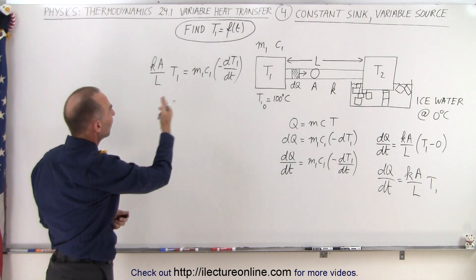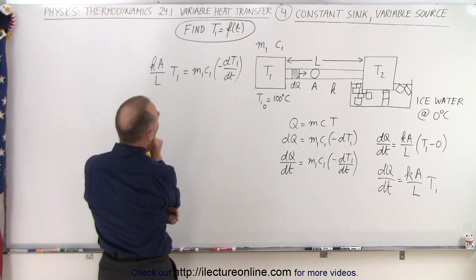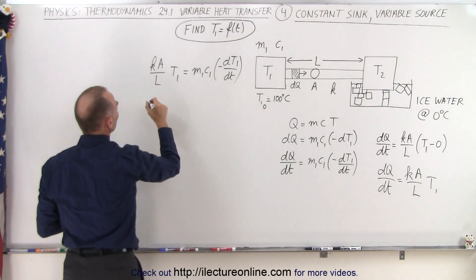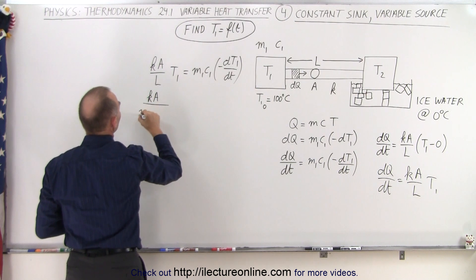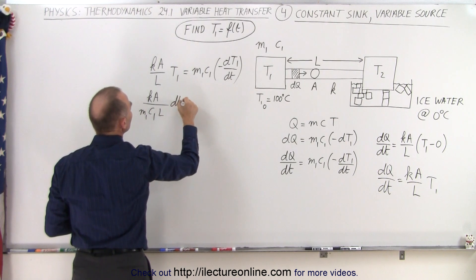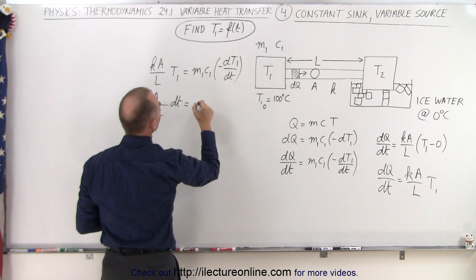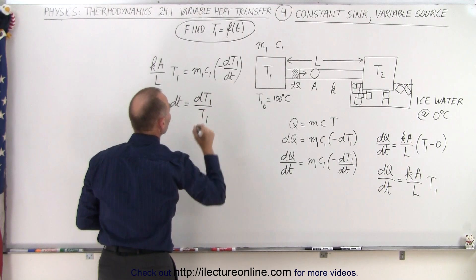So let's put all the temperatures on the left side, all the times on the right side. Let's see, can I do that? No, I have to cross multiply. Let's do that. So here we have Ka over M1C1L times dt is equal to, and I'm going to put the negative in front of here, and that's going to be equal to dt1 over t1.